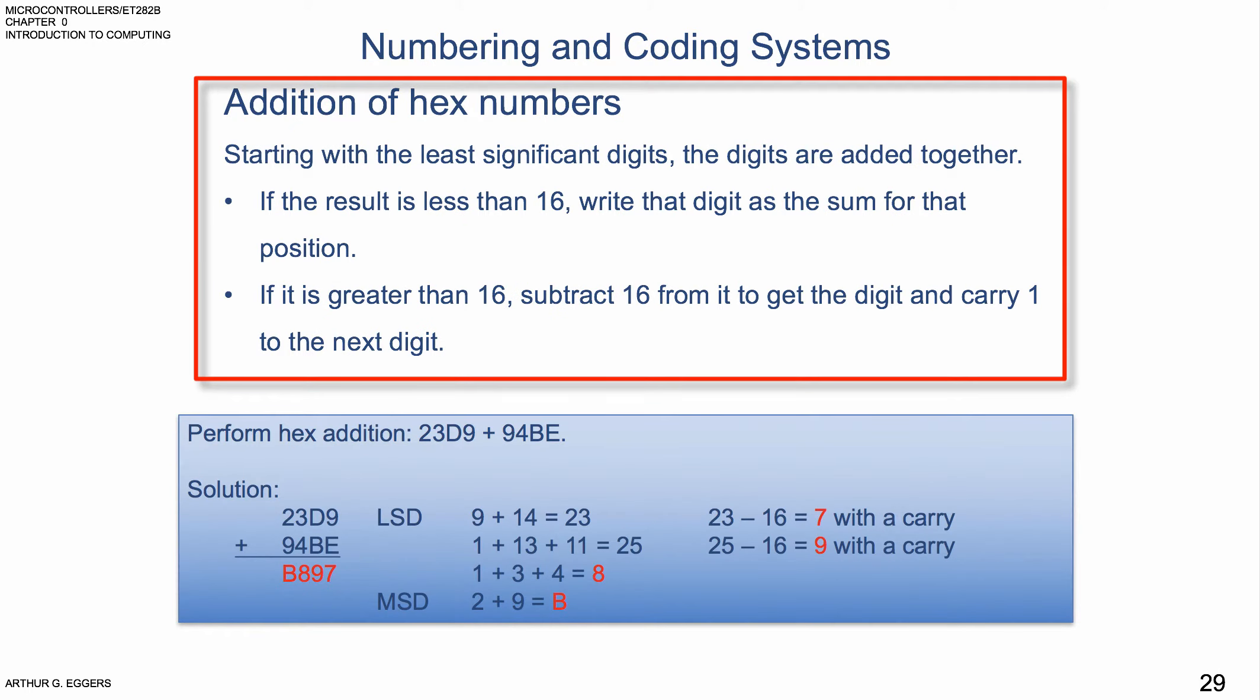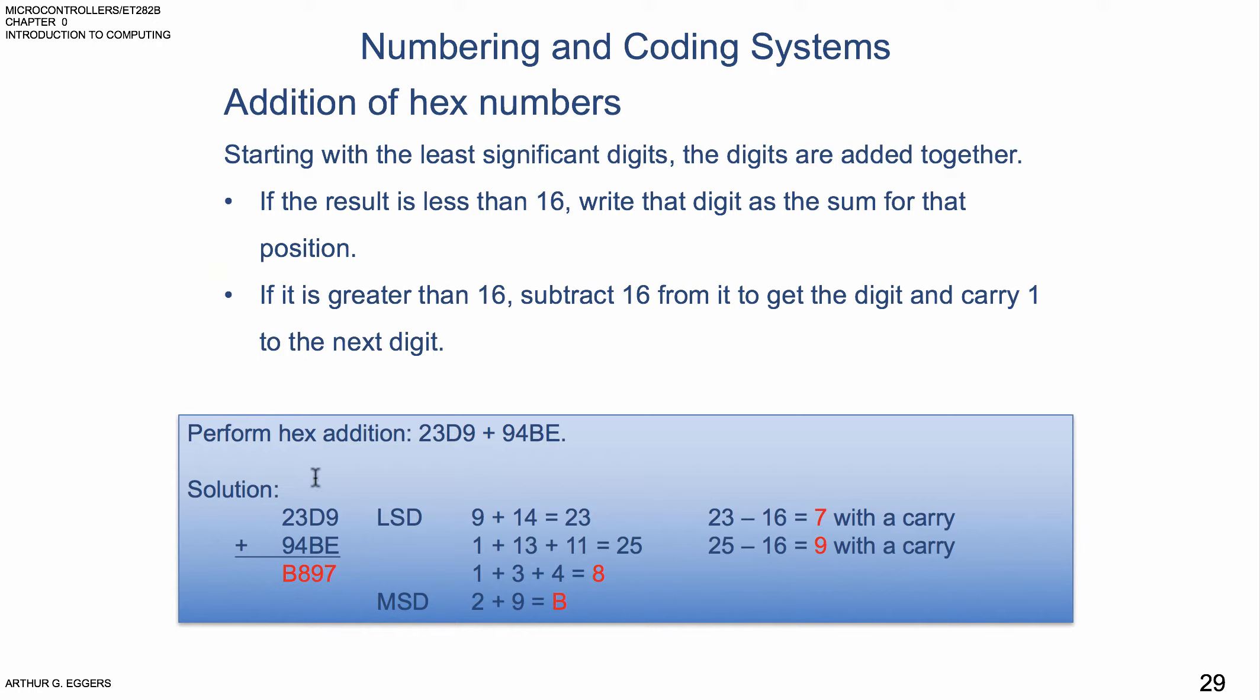Now if we want to add hex numbers together, for a hex number addition, we're going to start with looking at some rules. If the result is less than 16, we write that digit as the sum for that position, nothing changes. But if it's greater than 16, just like we do with greater than 10 in decimal, we're going to subtract 16 then to get the digit and carry 1 to the next digit.